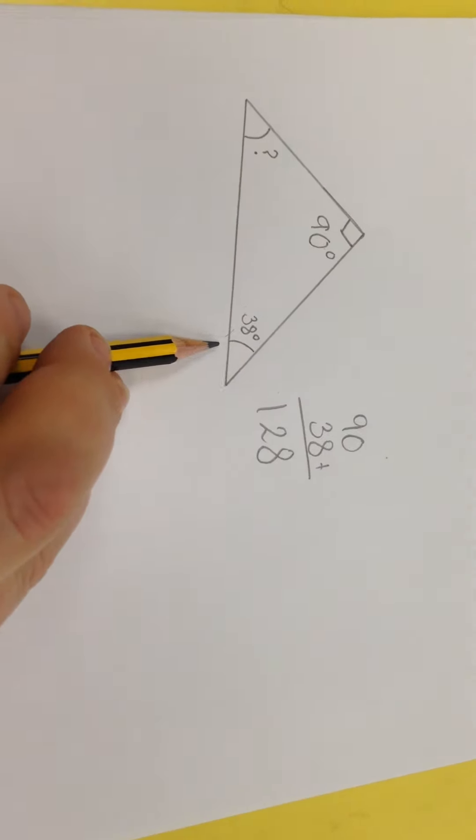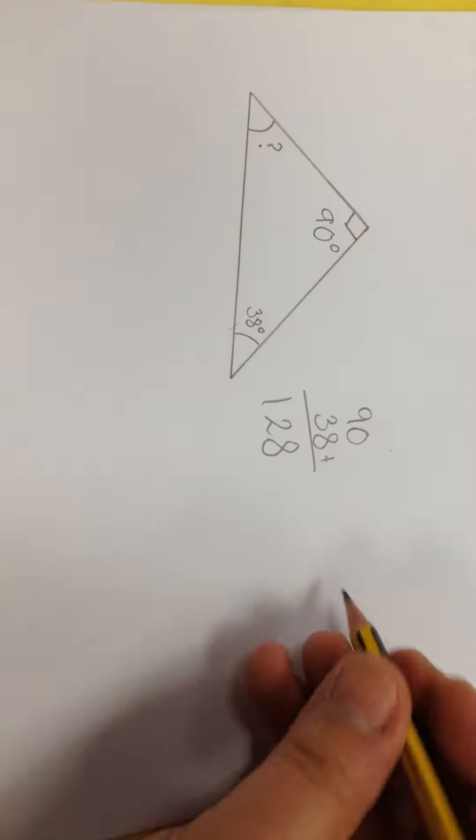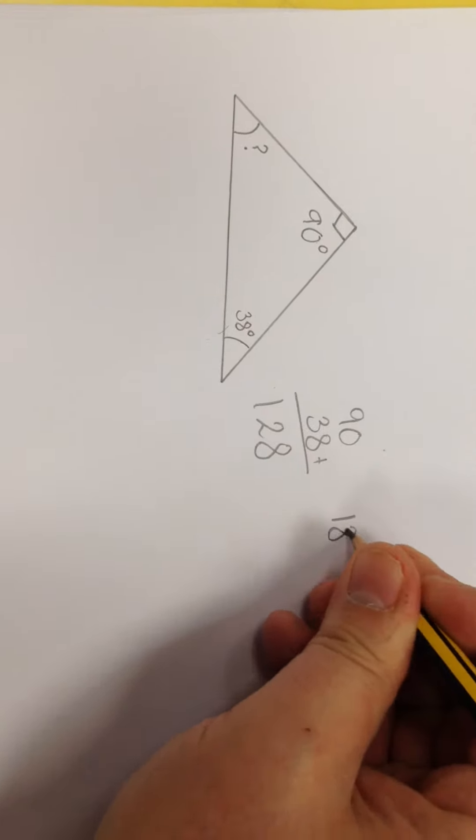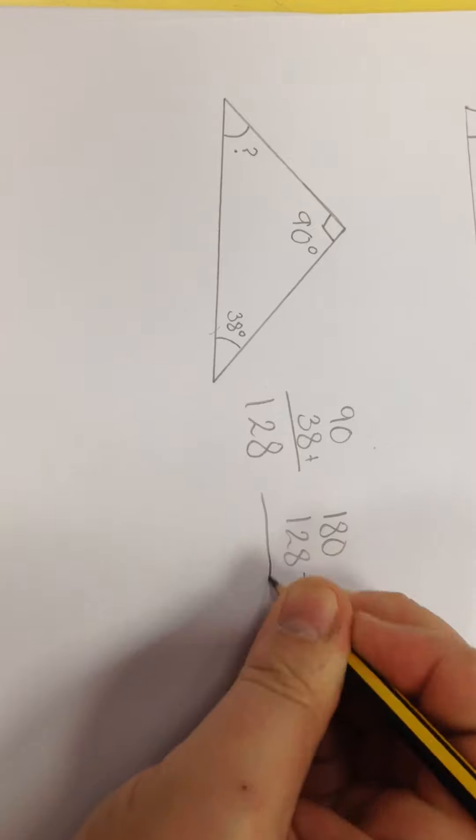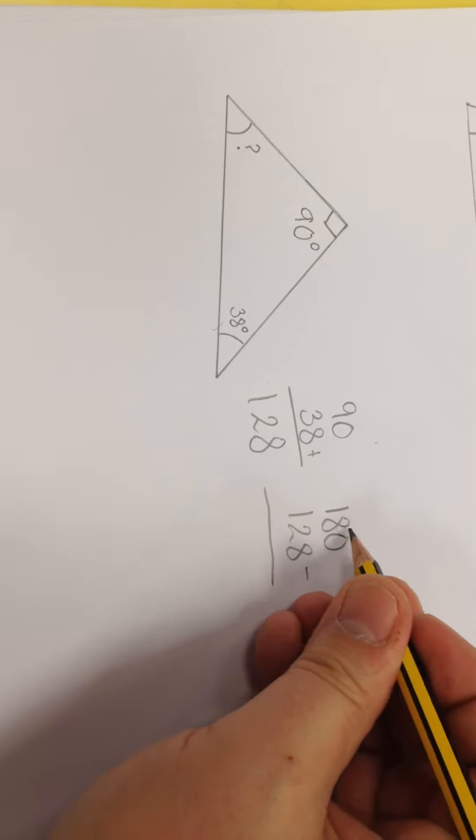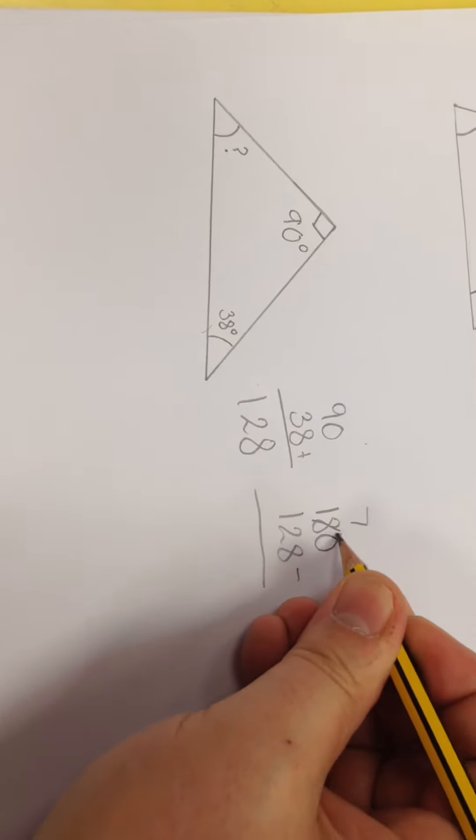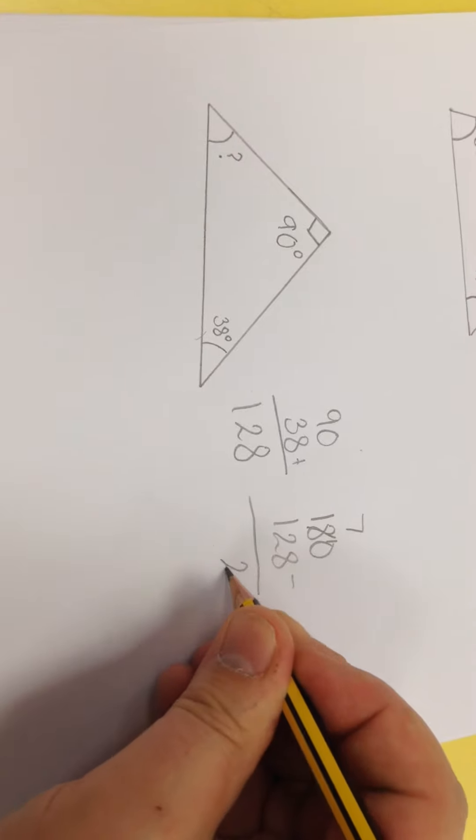So these two add to 128. I'm going to find the difference between 180. So I've got 180, subtract 128. 0 take away 8, I'm going to have to borrow again.